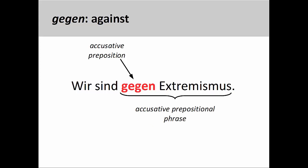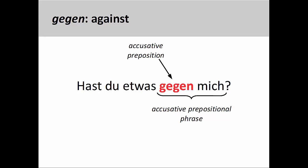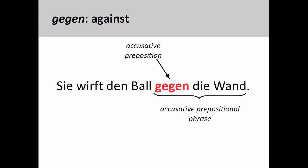The preposition gegen has a lot of meanings. It can mean either against an idea, as in Wir sind gegen Extremismus — we are against extremism — or against a person, such as Hast du etwas gegen mich? — Do you have something against me? Here, the first person singular accusative personal pronoun mich is the object of the preposition. Gegen can also mean against in the sense of a physical object. For example, Sie wirft den Ball gegen die Wand — She throws the ball against the wall.